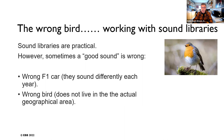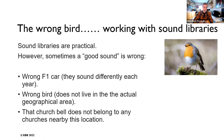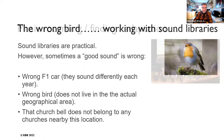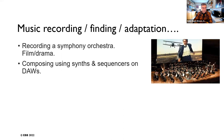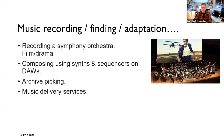Using the wrong church bell — one that doesn't belong to any churches near the filming location — is another pitfall when using libraries if you're not precise. Then there's music recording: finding music, adopting it, going to Prague to record a symphony orchestra for a film drama, or perhaps the dubbing engineer owns a synthesizer and can record the music themselves. Or you go to archives and delivery services to find and treat music for your purpose.